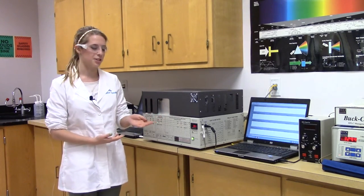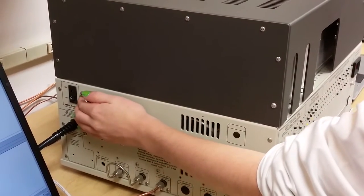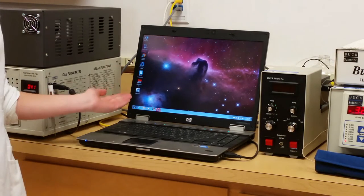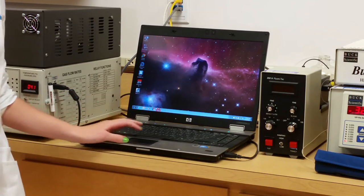First step is to turn on the GC. The switch is located on the side of the instrument in the back. The program we will be using today is called Peak Simple. It's located on the desktop in a red and gray box. When opened, it looks like this.